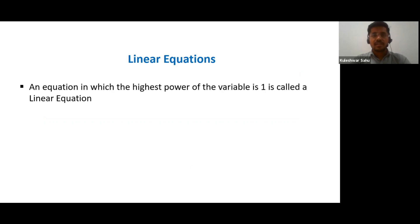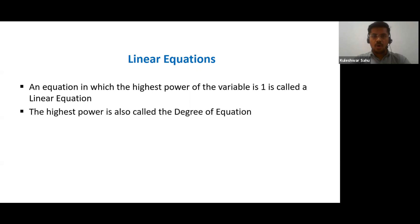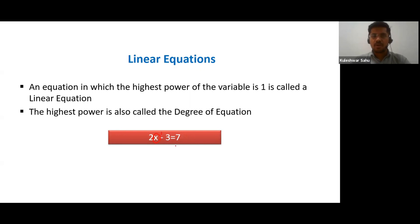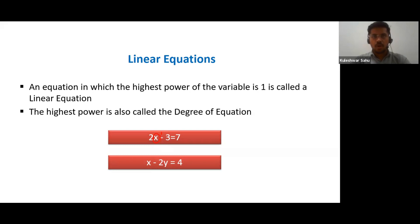An equation in which the highest power of a variable is one is called a linear equation. The highest power is also called the degree of the equation. Some examples of linear equations are: 2x minus 3 is equal to 7. Here x is a variable with a power of one, and the highest power in the whole equation is one — hence this is a linear equation. A second example is x minus 2y is equal to 4. Here there are two variables x and y, but the highest power is still one, so it is also a linear equation.